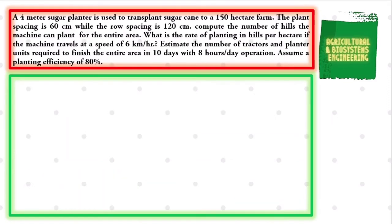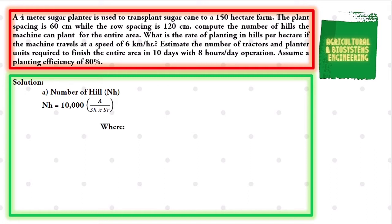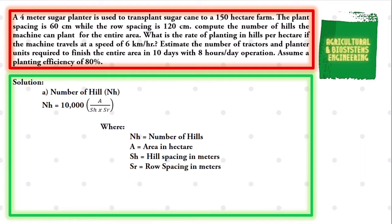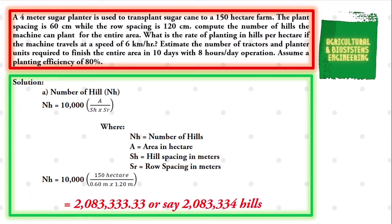The first value we are going to solve is the number of hills. The formula is: NH = 10,000 × (A / (SH × SR)), where NH is the number of hills, A is the area in hectares, SH is the hill spacing in meters, and SR is the row spacing in meters. Substituting: NH = 10,000 × (150 / (0.60 × 1.20)). We get a final value of 2,083,333.33, so we round up to 2,083,334 hills, since we cannot have a decimal number for hills.